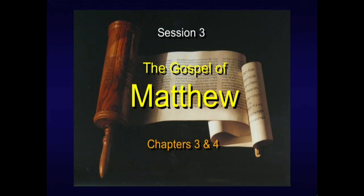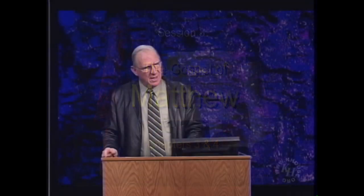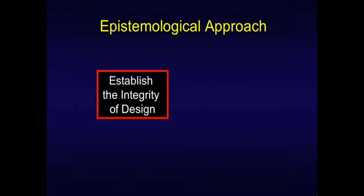We're now in Session 3 of the Gospel of Matthew, focusing on Chapters 3 and 4. I want to remind you of our epistemological approach — epistemology is the study of knowledge, its scope and limits. Our approach is to first establish the integrity of the design of these 66 books we call the Bible. Even though it was penned by 40 different guys over thousands of years, we discover it's an integrated message — not just in themes, but every number, every detail, even the mathematical structures underneath the text. We now discover evidence of a design from end to end that's absolutely astonishing.